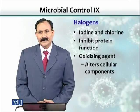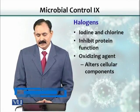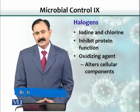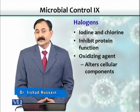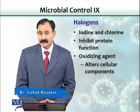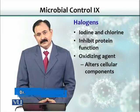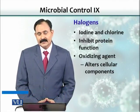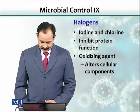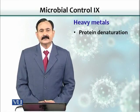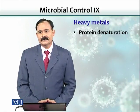Halogens, which include iodine and chlorine, denature proteins. They are also used as oxidizing agents, so they alter cellular components. Heavy metals cause denaturation of proteins.